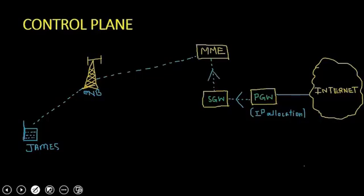SGW to MME, MME to eNodeB, and eNodeB towards the UE finally.